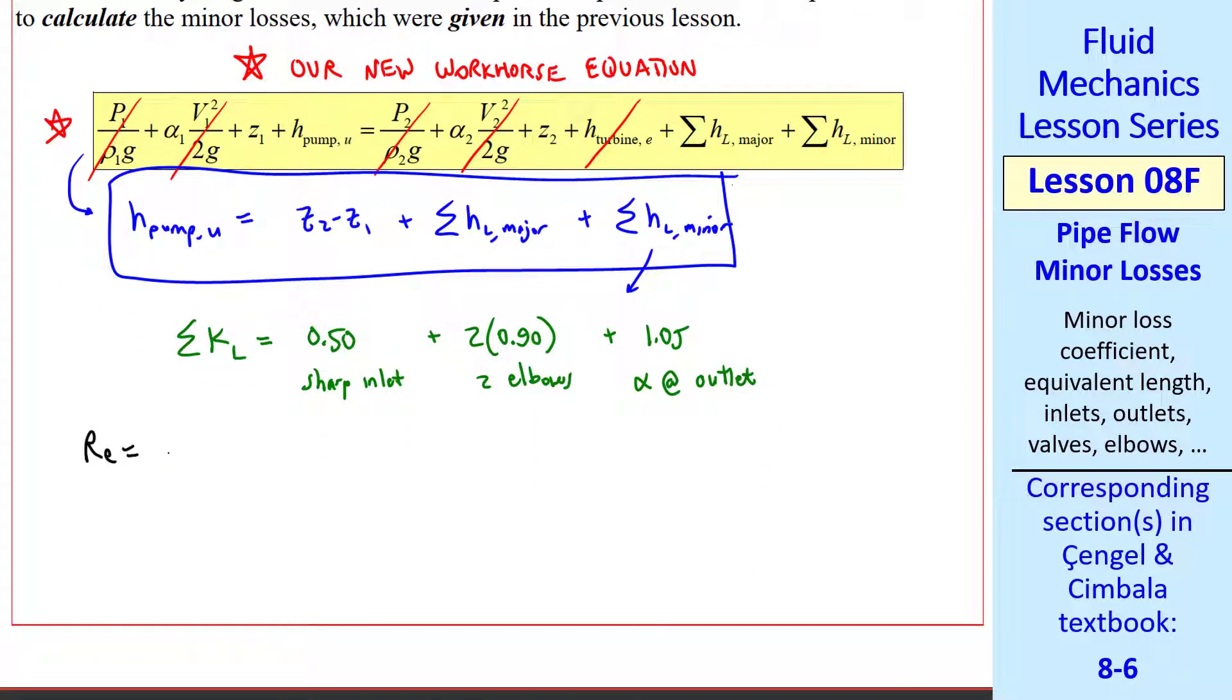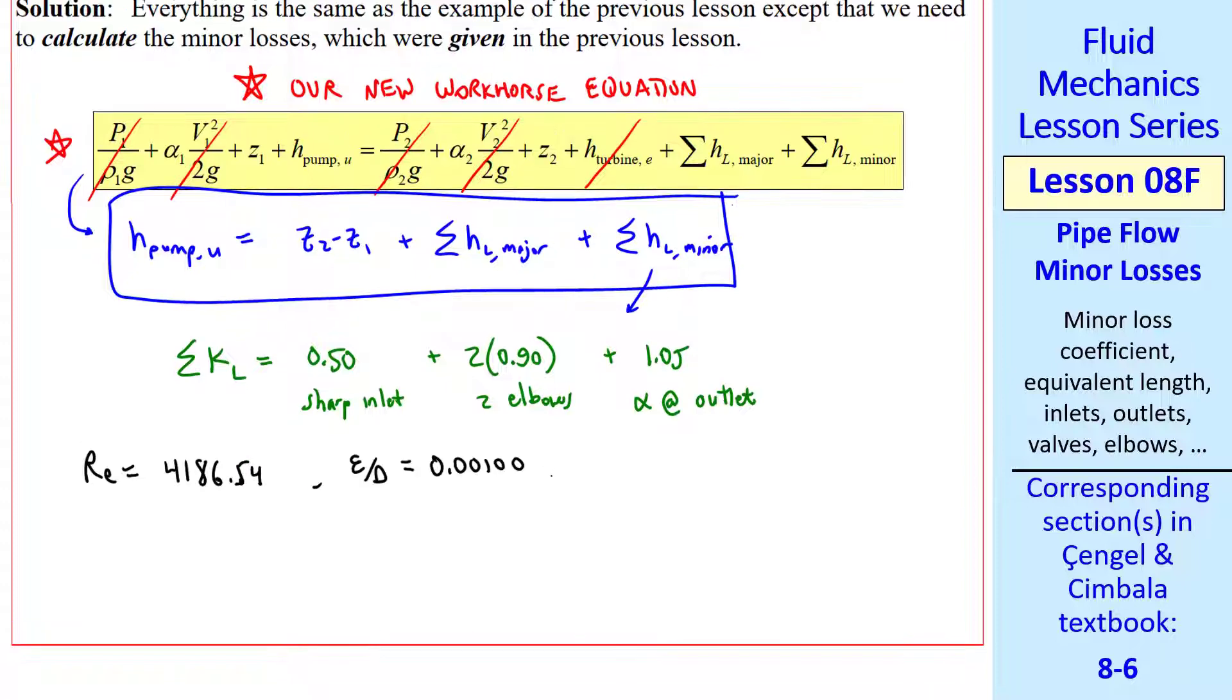From our previous lesson, we had calculated Reynolds number, epsilon over d, and f from the Churchill equation. These are all the same as the previous lesson. By the way, sigma KL sums up to 3.35.